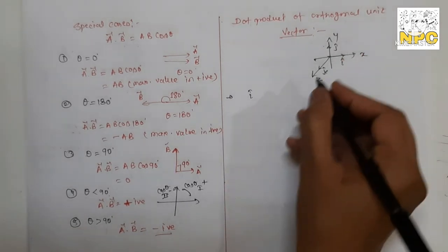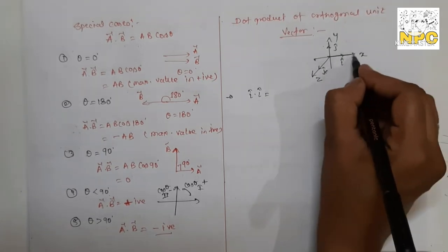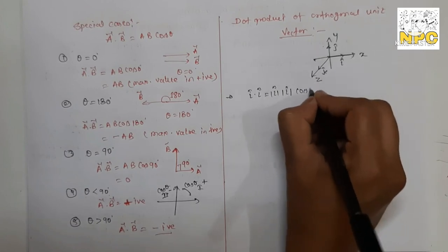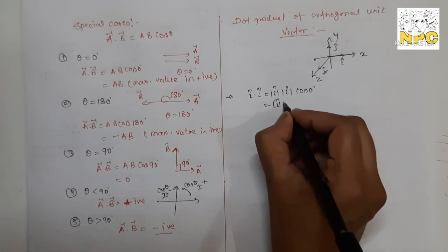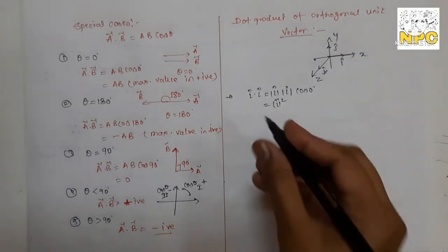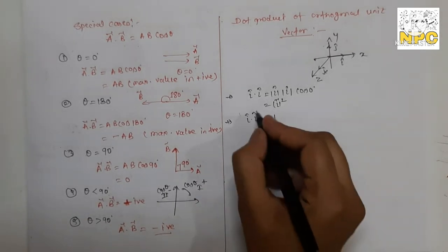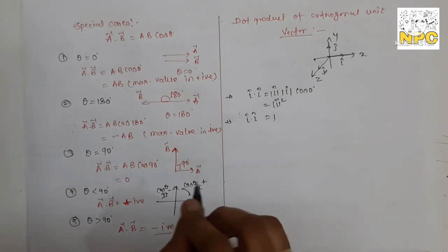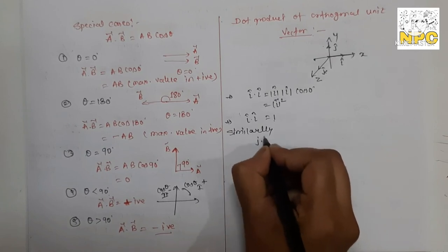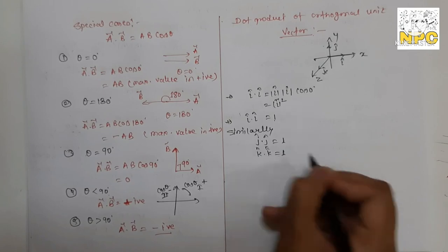If we take i dot i — two unit vectors along the same axis — the angle between them is zero degrees. So the result is the magnitude of i times the magnitude of i times cos 0, which equals 1 × 1 × 1 = 1. So i dot i equals 1. Similarly, j dot j equals 1 and k dot k equals 1.